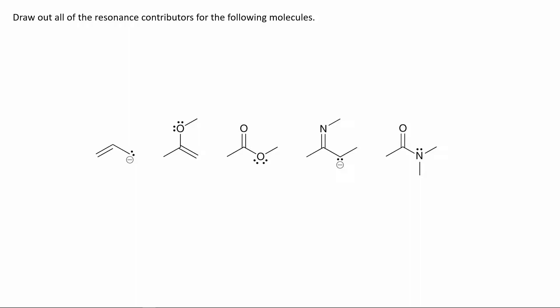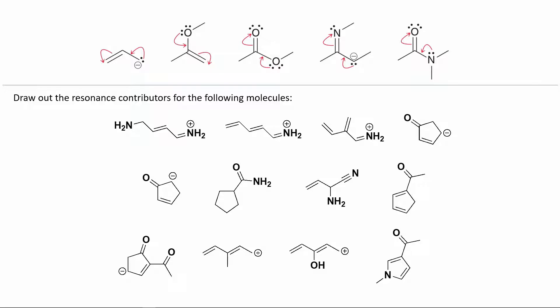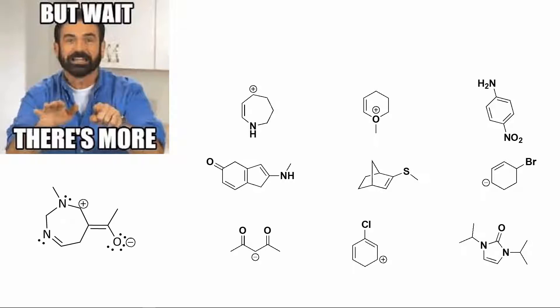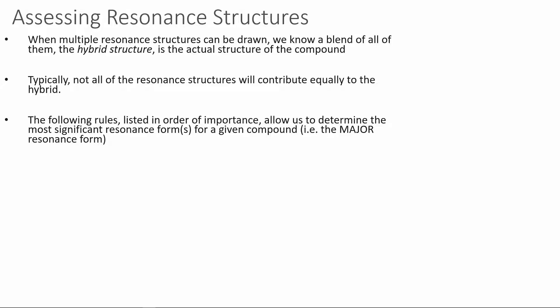Some practice problems: draw out all the resonance contributors for the following molecules — this will be on the worksheet. There are a few more molecules as well. The only way to get good at drawing resonance and recognizing patterns is to practice many different examples. When we have multiple resonance structures for a molecule, we can blend them together into a hybrid structure, which is the best single representation of where the electrons actually are in the molecule.